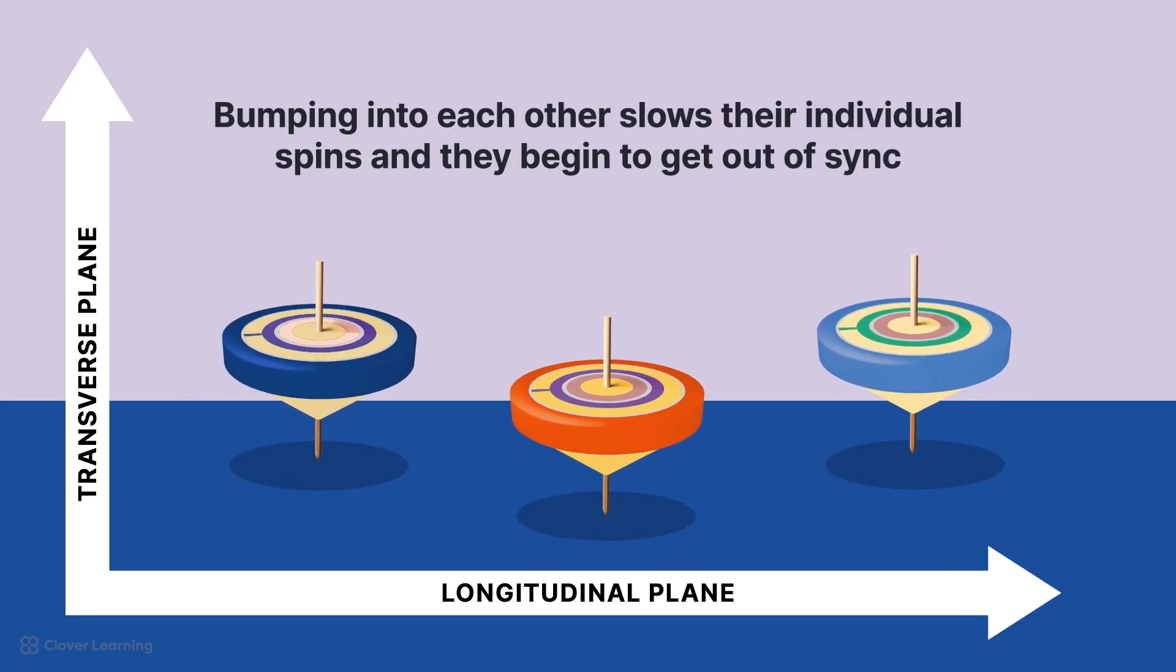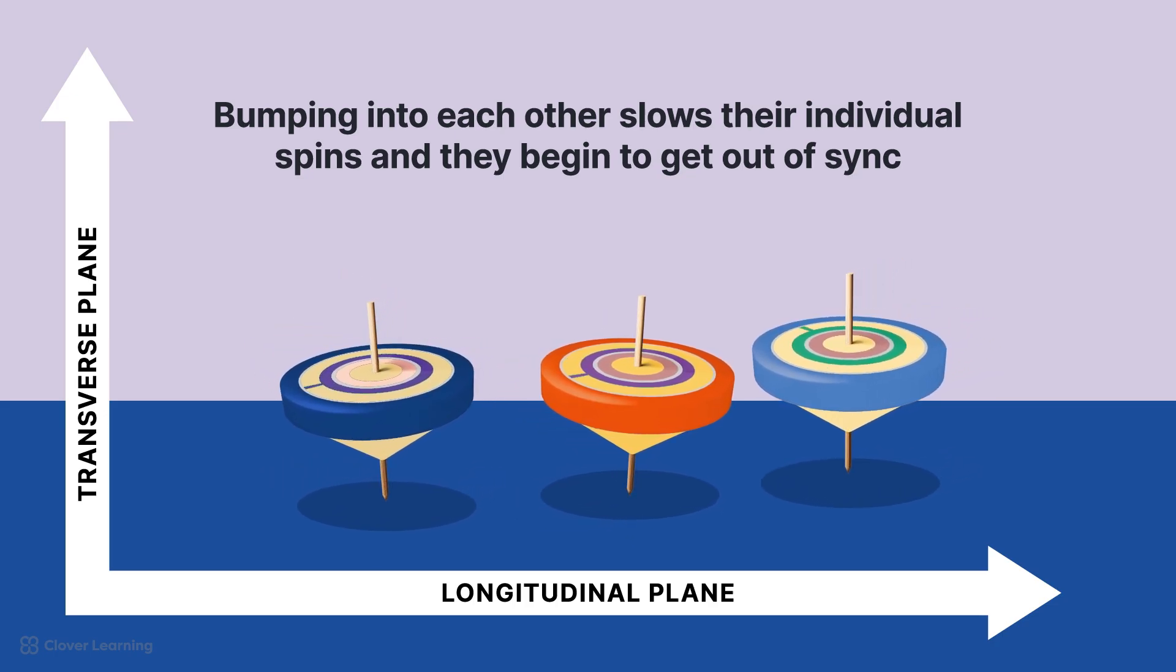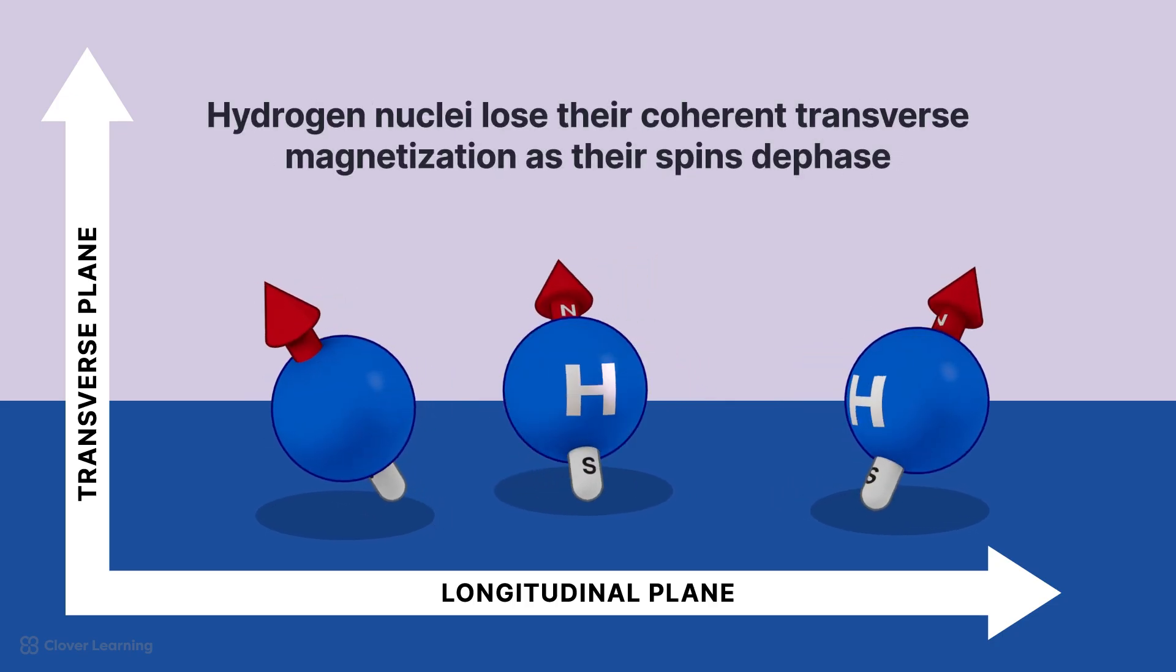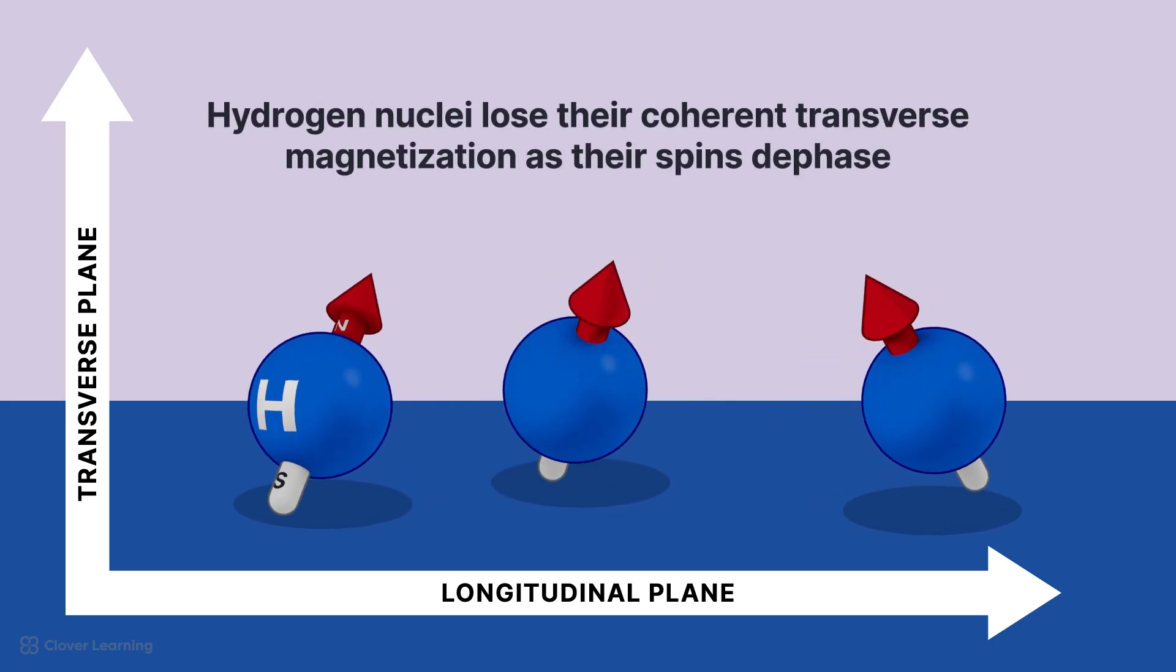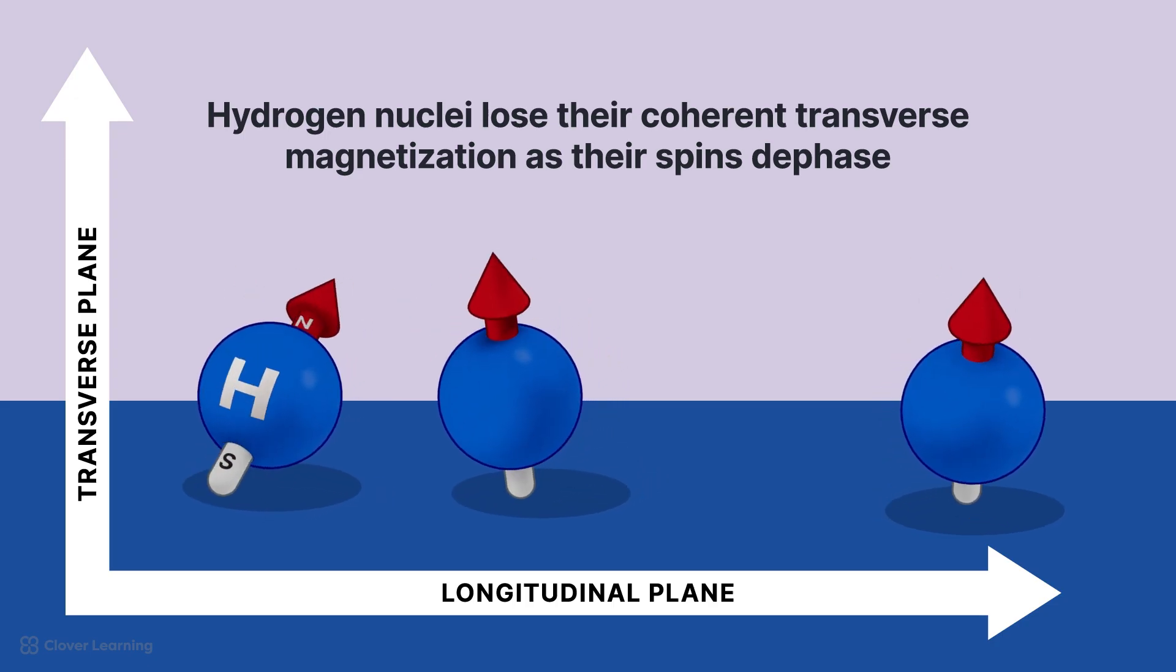However, when they begin bumping into each other, this interaction slows their individual spins and they begin to get out of sync. Those tops are the hydrogen nuclei, which, like the tops, lose their coherent transverse magnetization as their spins dephase.